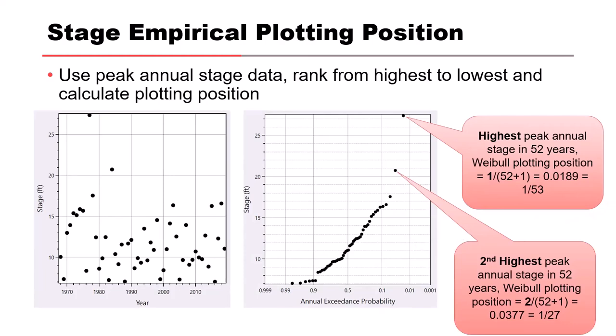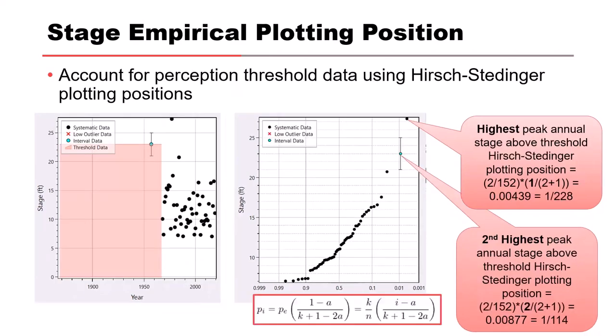In this example, there are 52 years of peak annual stages. The highest stage is calculated as rank 1 divided by the number of years of data, 52, plus 1. The second highest stage uses rank 2 in the numerator with the same denominator. We add 1 to the denominator because we're using the typically recommended Weibel plotting position for stage, as it corrects for bias by being the mean of the sampling distribution.